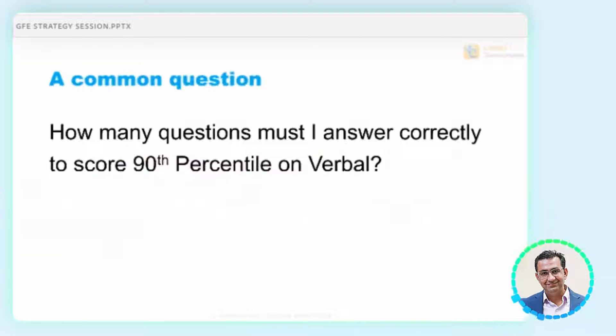Alright. So I'm going to really talk about this. How many of you asked this question? How many questions should I answer correctly to score a 90th percentile on verbal, quant or DI? How many of you asked the question such as this, and this could be verbal or quant or DI? There's two people? Alright. Quite a few of you.